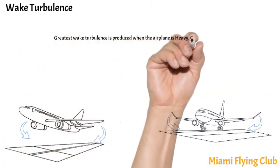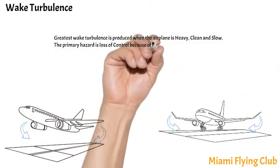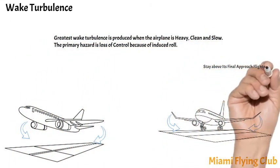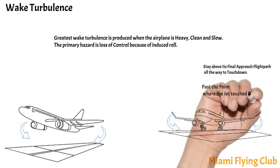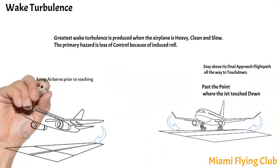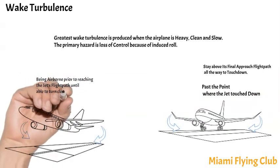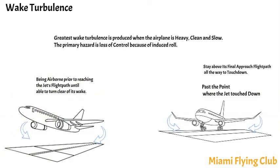Pilots should fly at or above the larger aircraft's flight path in order to avoid the wake turbulence created by wing tip vortices. On takeoff, a pilot should lift off prior to reaching the rotation point of a preceding large aircraft. The flight path should then remain upwind and above the preceding aircraft's flight path.